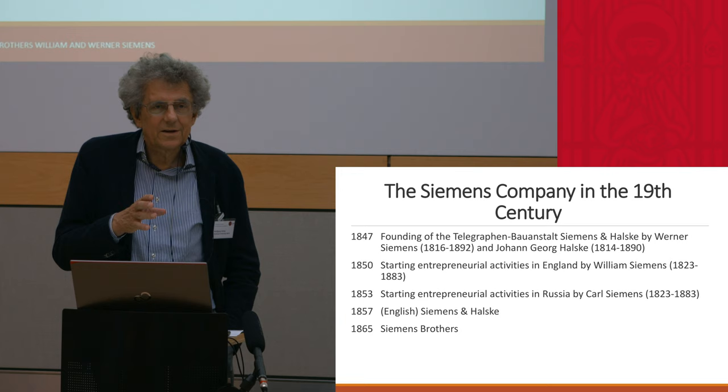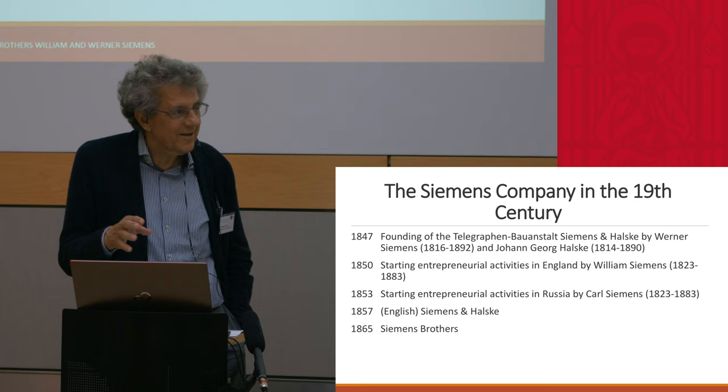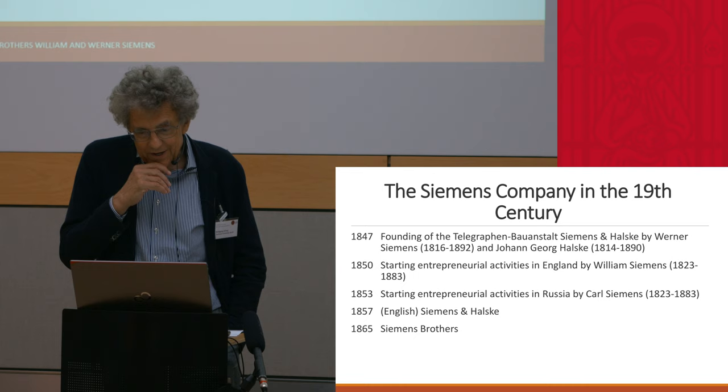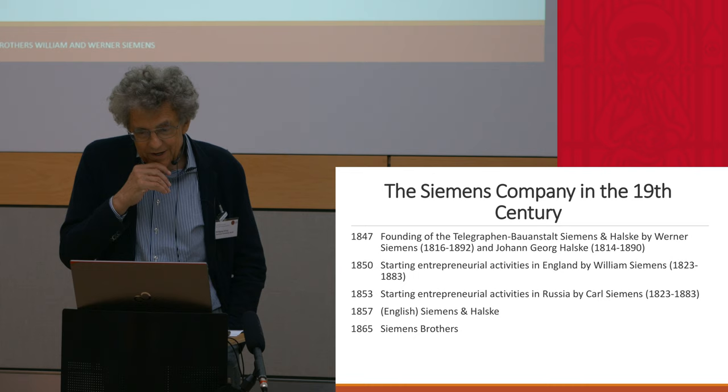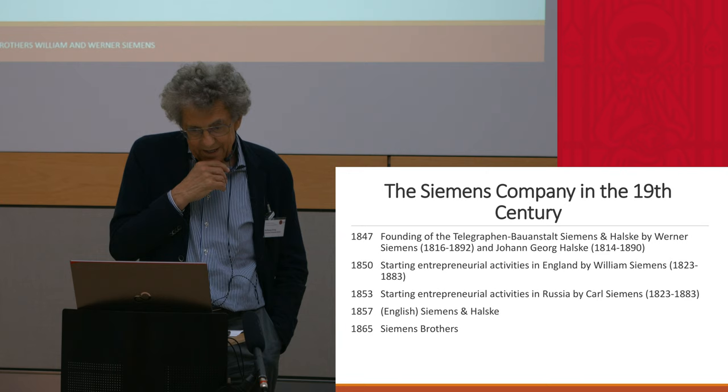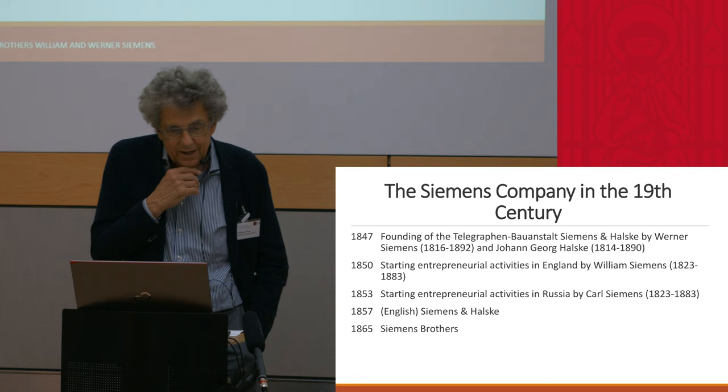He had, by the way, 14 sisters and brothers, and therefore he had a good selection. The most important brothers were William, who had the English company since the 1850s, and brother Carl, who had the Russian company since 1853.